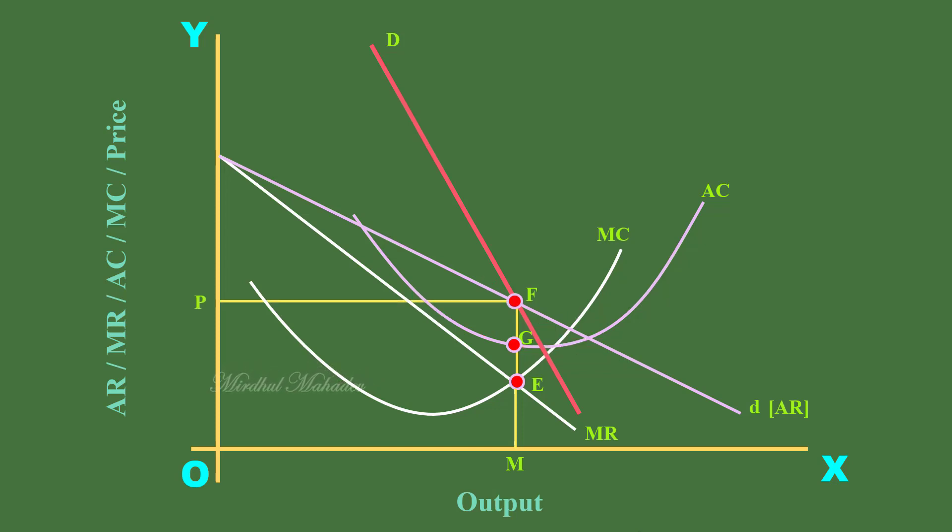The firm's super normal profit condition is also satisfied. Firm's total revenue is average revenue times output, OM multiplied by OP. Area OPFM represents total revenue. Total cost is average cost times output, OM multiplied by OH. Area OHGM represents total cost. Super normal profit is total revenue minus total cost, OPFM minus OHGM. Area PFGH represents abnormal profit.